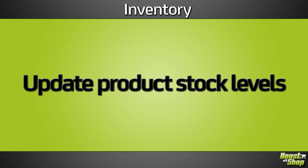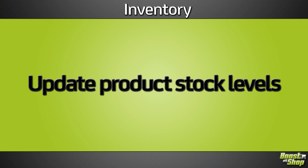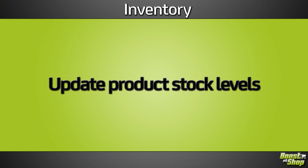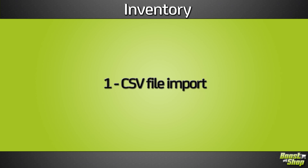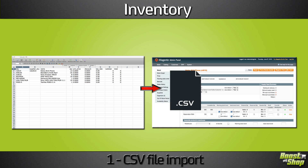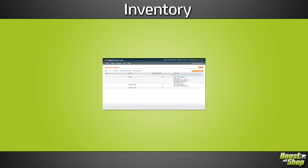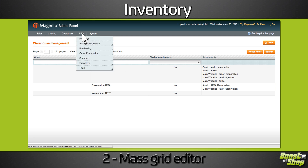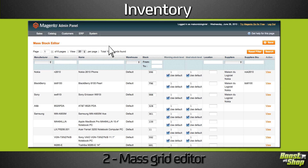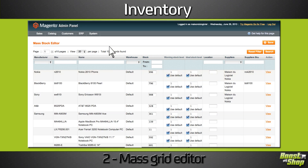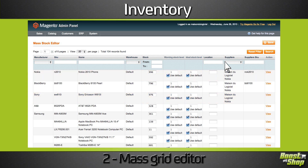Once you have set up your warehouse, you can easily update product stock levels. ERP provides three methods to perform it: CSV file import — arrange the stock values in Excel, import the file in ERP, and you're done. Mass Grid Editor — this tool helps you easily update a few stock levels from the Magento admin panel; filter the grid by manufacturer, product, or warehouse, change the stock levels, and save.